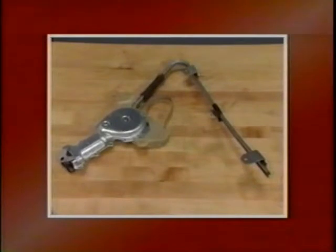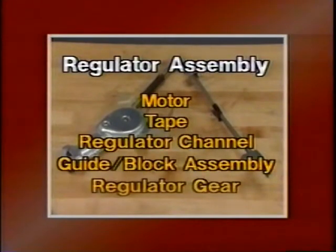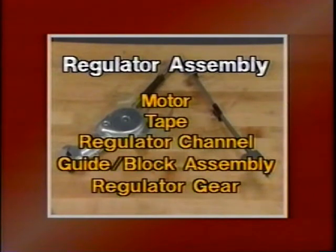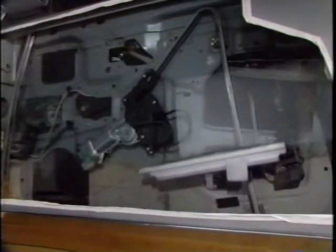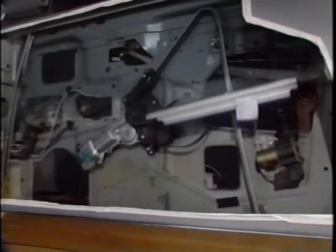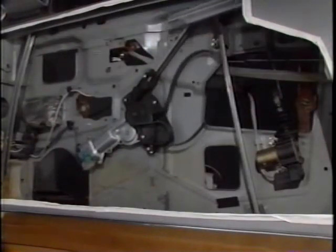A closer look at the regulator assembly reveals that it includes a motor, tape, regulator channel, guide block assembly, and regulator gear. Working together, these components provide the muscle to operate the window system.